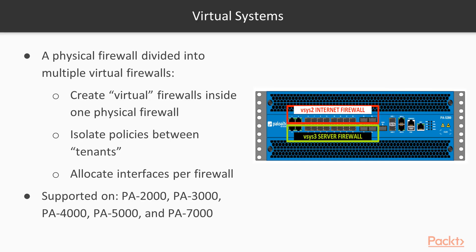In this video we're going to take a look at virtual systems on Palo Alto firewalls. This is one of the greatest features — you have a very powerful firewall with a lot of resources and multiple uses for it. Say you want to create some internet rules and also have some server traffic rules, with a completely isolated environment where servers are isolated from clients. Users must traverse the Palo Alto firewall to hit the servers, where you can apply policies and avoid attacks from the user side of your network. Usually you'd need to buy an additional appliance just to do that.